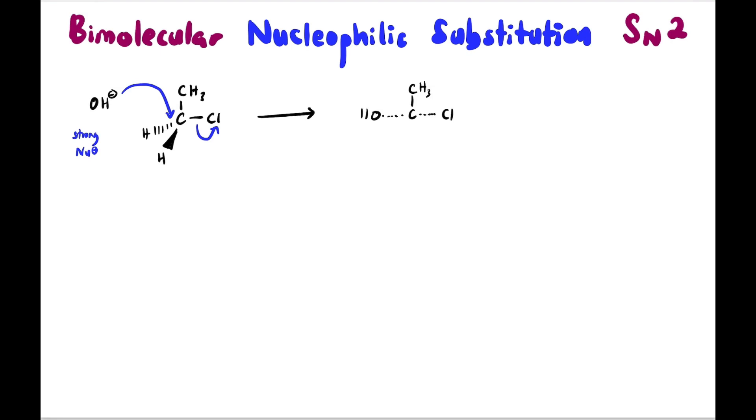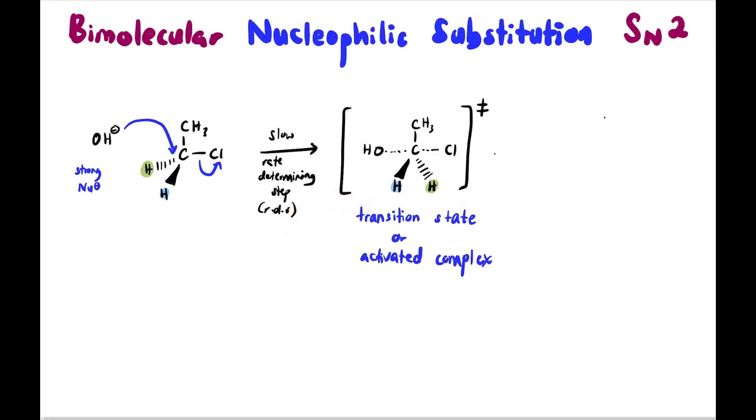Nucleophile attacks from behind. So we will get here OH not yet fully bonded. And at the same time, Cl hasn't fully left yet actually. And then H2 will switch places. So this is called the transition state or activated complex. The step to produce this transition state is called the rate determining step. It involves two compounds: the nucleophile and the haloalkane simultaneously.